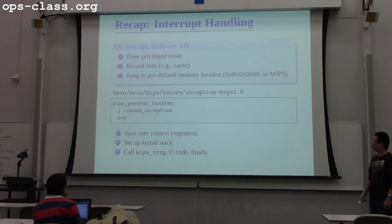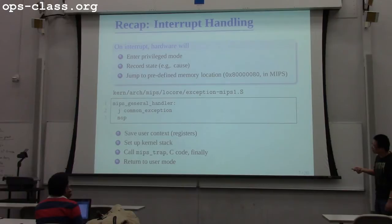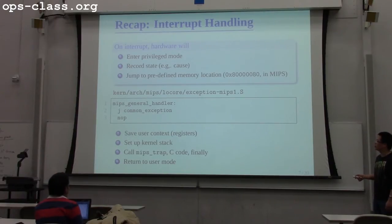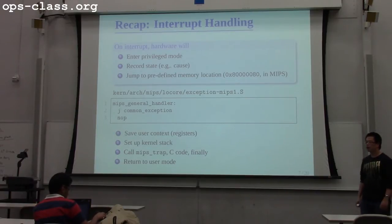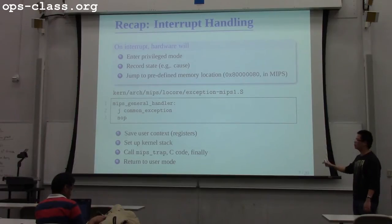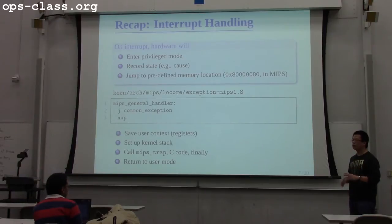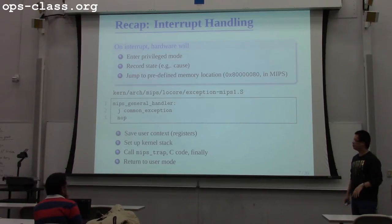This is the real syscall handler, mips_trap, which is more manageable. After this function, we're supposed to have already handled the syscall or interrupt, and we return to user space via the common exception handler. The slides for this lecture are already posted online, and these slides will be posted after Friday.